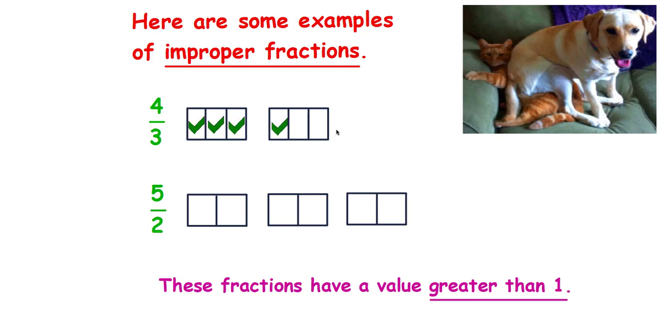This improper fraction is greater than one. It equals one and one-third. Here's another example of an improper fraction.